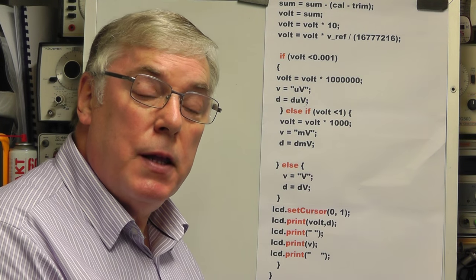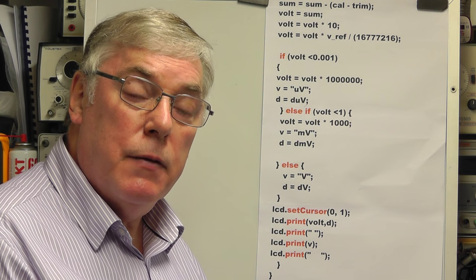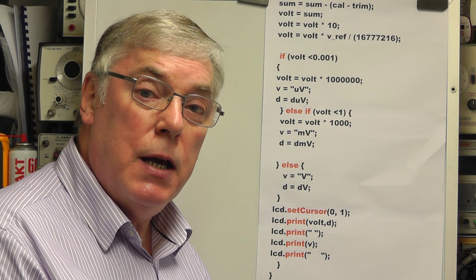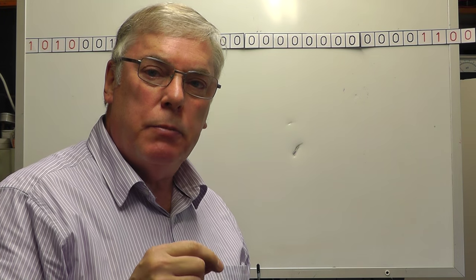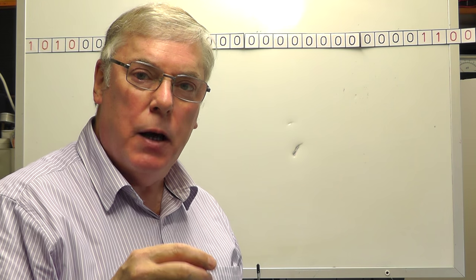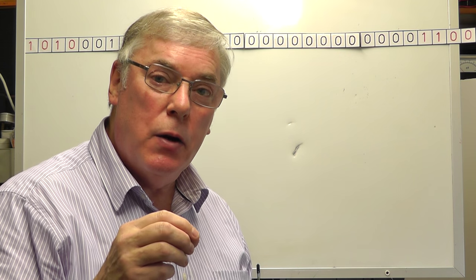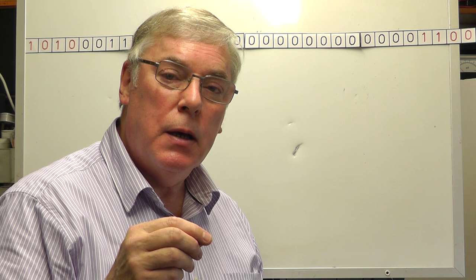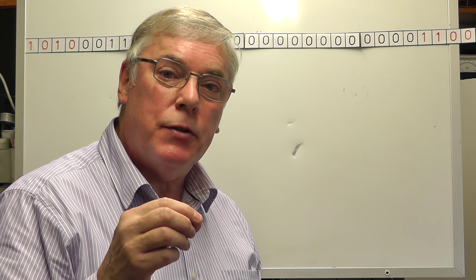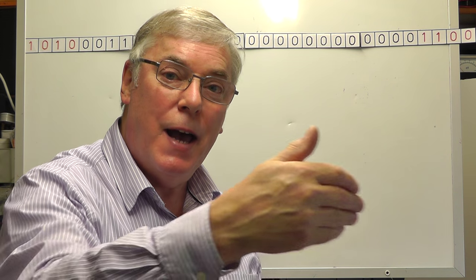I think the next thing to look at is the two subroutines. One reads the digital data from the ADC, the other handles the calibration button. Just before looking at the read subroutine, I want to explain the basics: the Arduino can only accept eight bits at a time. So with a 32-bit data stream, we have to cut it up into eight bits at a time — that gives us four groups of eight.